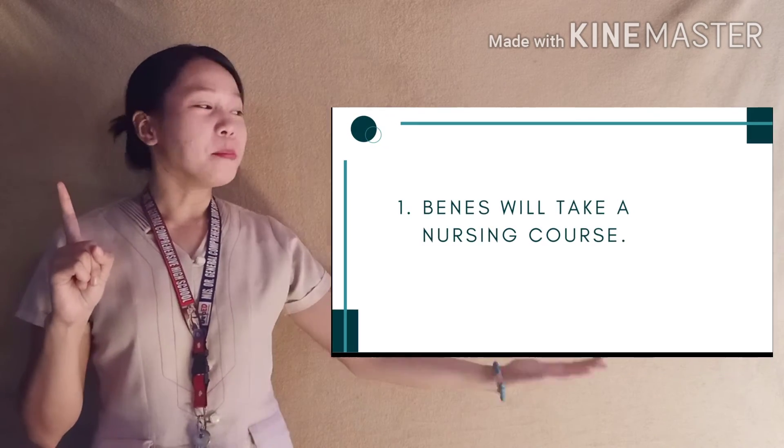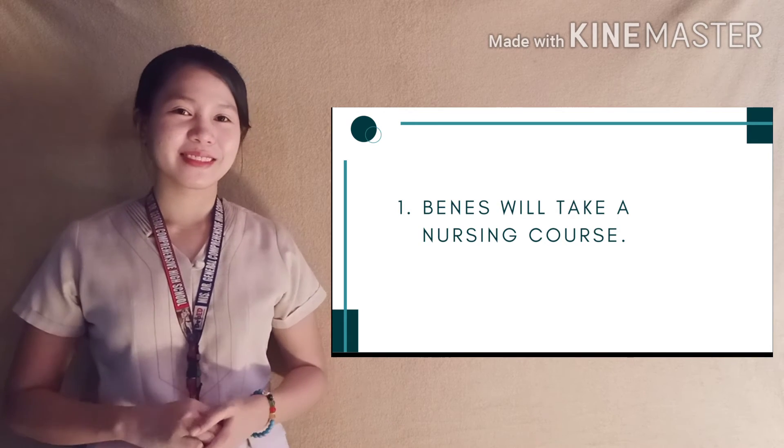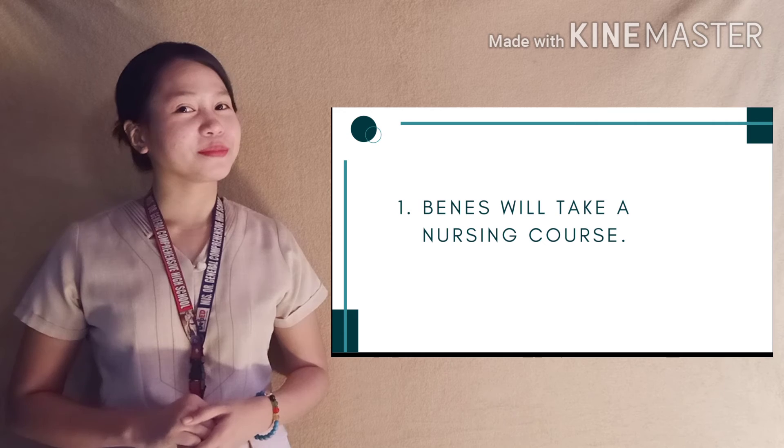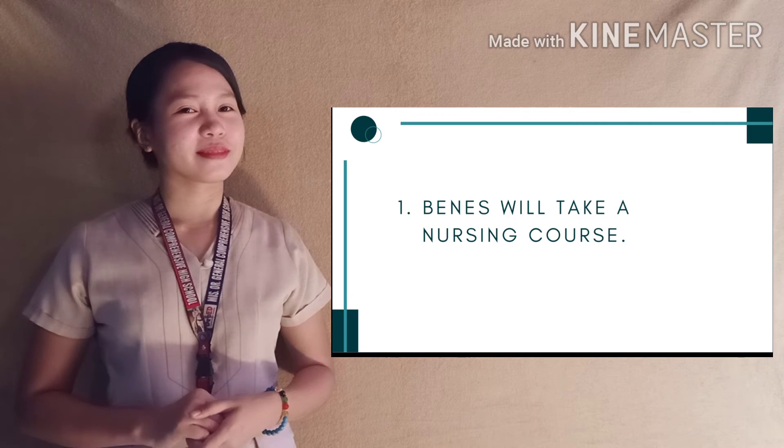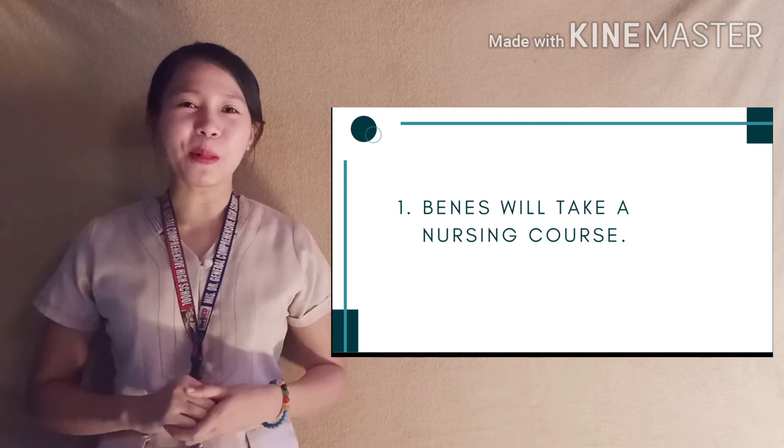I think we are ready for an activity. Simply classify if the proposition is simple or compound, and further classify if it is a conjunction, disjunction, conditional, biconditional, or negation. Let's start. Number 1: Venice will take a nursing course. What type of proposition is this? You're right — it's a simple proposition.